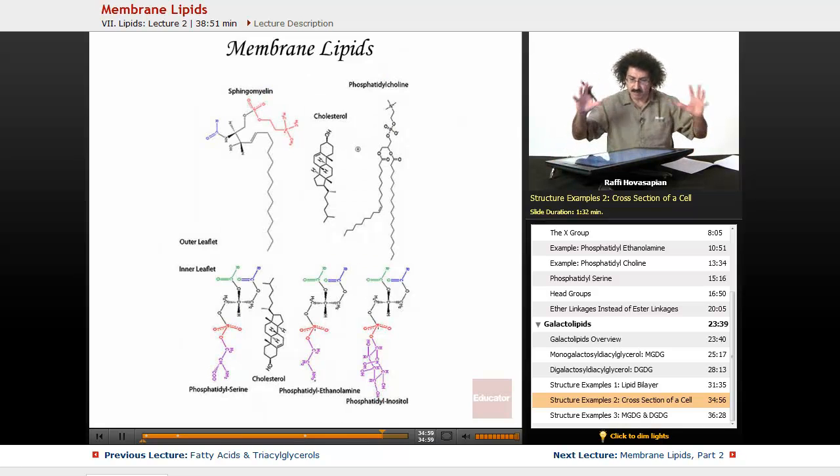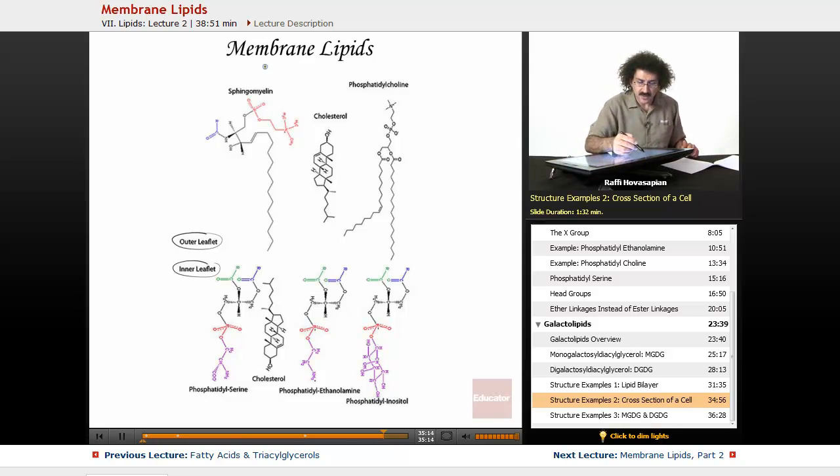Okay, so this is a nice blown up view of a cross section of a cell. So in the outer leaflet, the inner leaflet, so in the outside of the cell, the inside of the cell. So this is going to be sphingomyelin, cholesterol, phosphatidylcholine. A couple of these we actually haven't talked about yet, they're going to be the other classes that we're going to talk about, the sphingolipids and the sterols. But this one we've talked about.